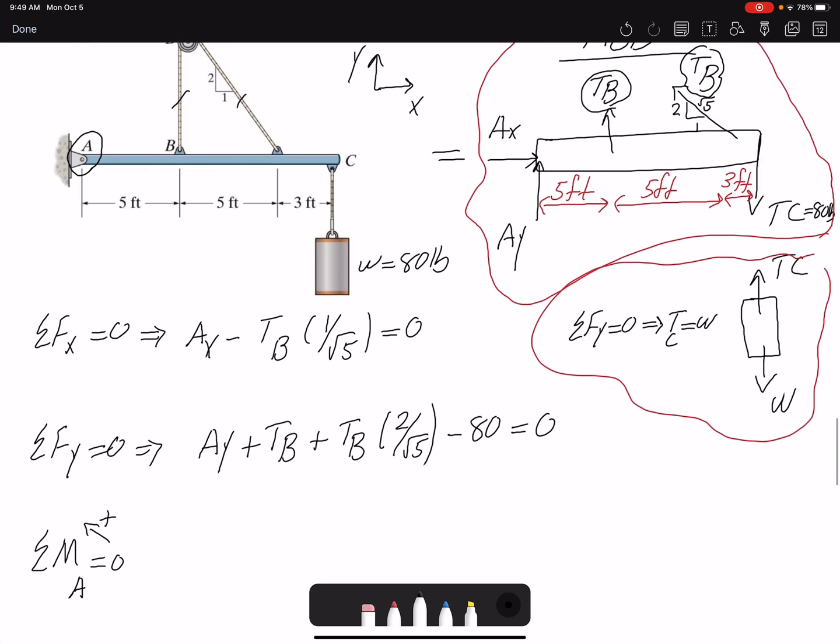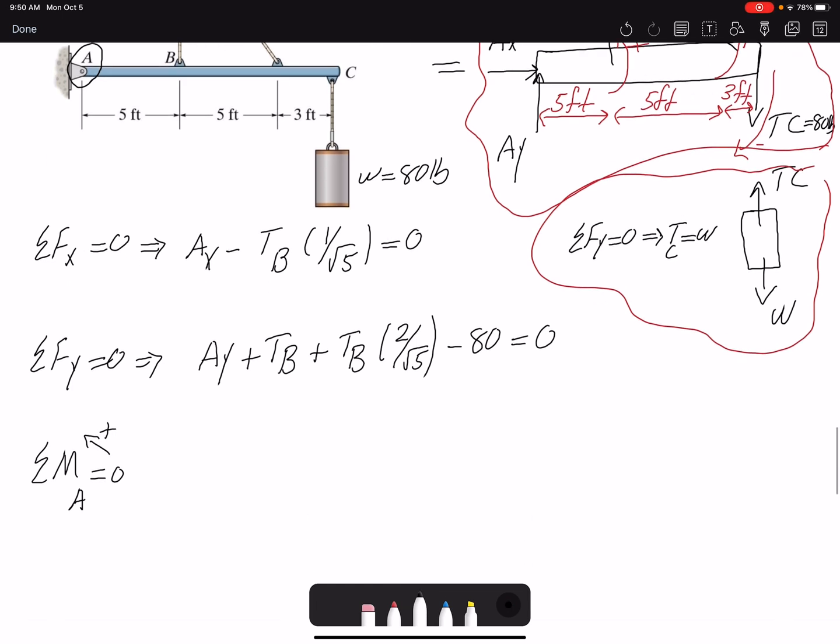Let's see what forces are creating a moment. We have this force TB creating a positive moment. The vertical component of the second TB is also a positive moment. TC is creating a negative moment. So we have three components in our moment equation.